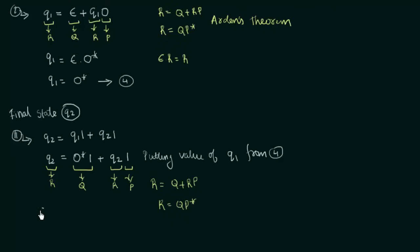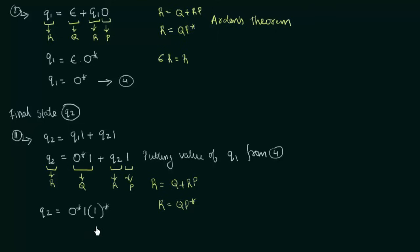By Arden's theorem, r = q·p*, so q2 = 0*·1·1*. This is the regular expression for the final state q2.